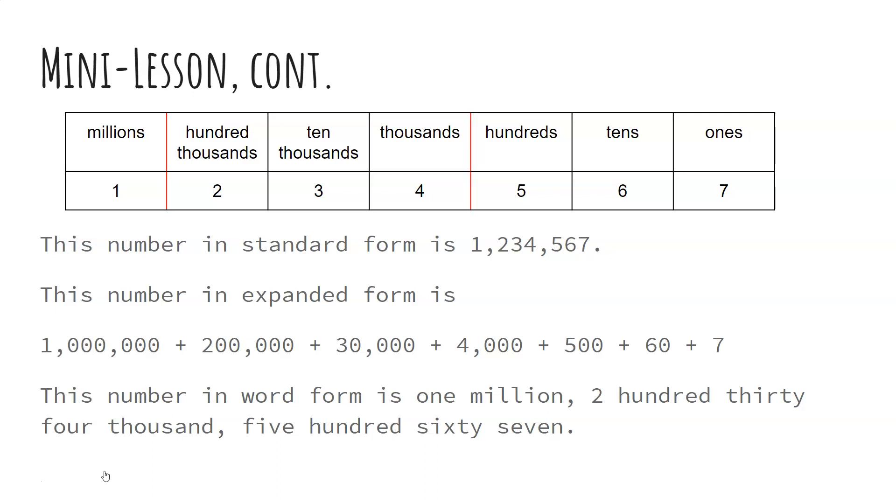If we split those place values apart into expanded form, we have a 1 in the millions place for 1,000,000. We have a 2 in the 100,000s for 200,000. A 3 in the 10,000s for 30,000. A 4 in the 1,000s for 4,000.